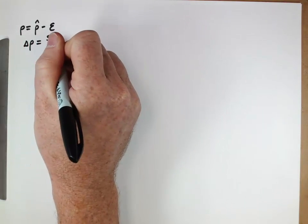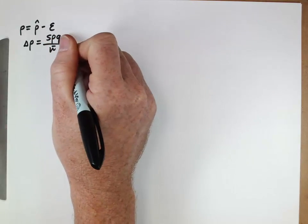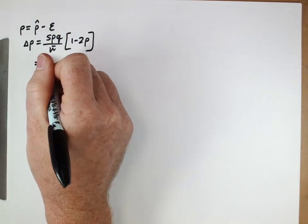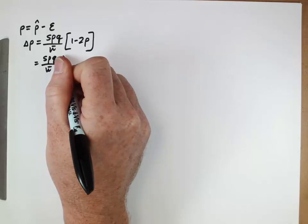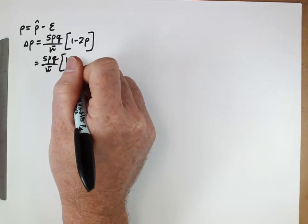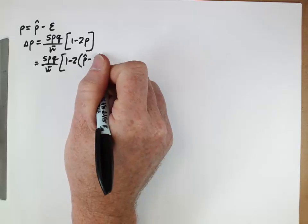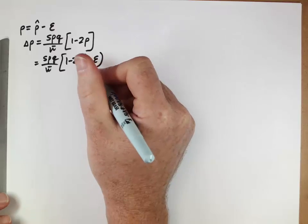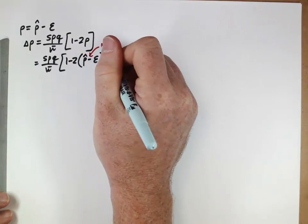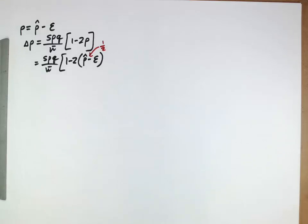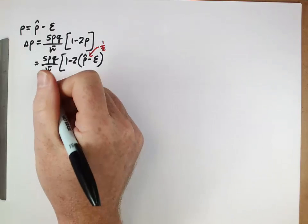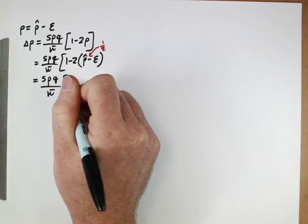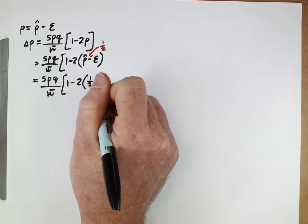We have our delta p equation from before: delta p = s·p·q / w̄ · (1 − 2p). Substituting in, we already know what the equilibrium frequency was — we derived it earlier. We know that p̂ equals one-half. So we substitute that in: delta p = s·p·q / w̄ · (1 − 2·(1/2 − ε)).